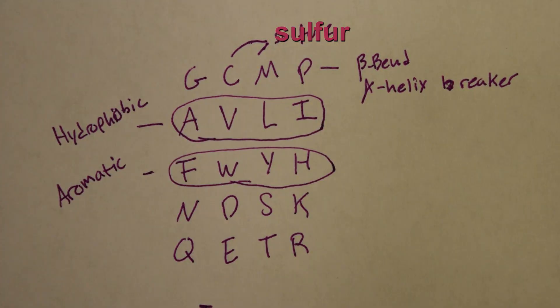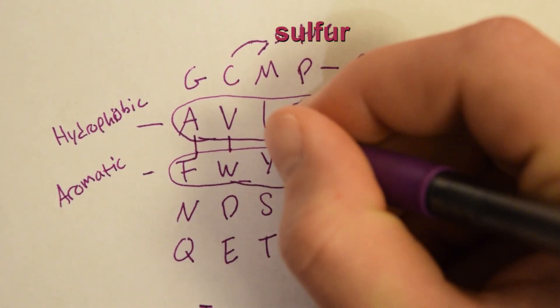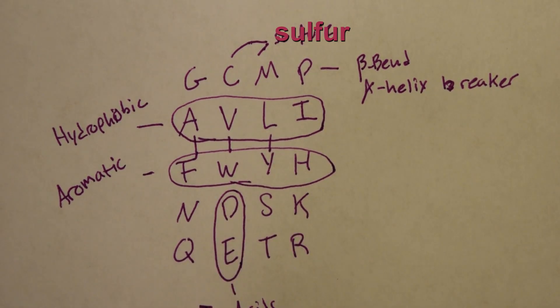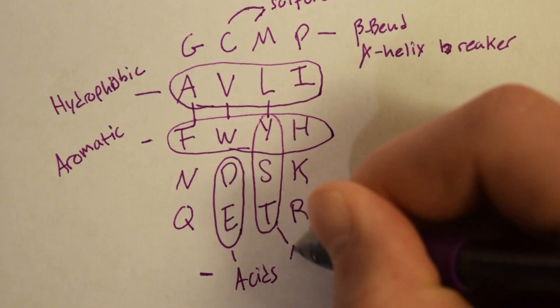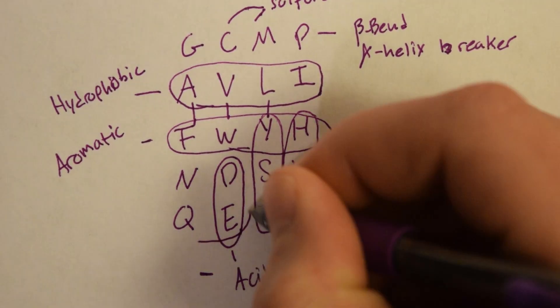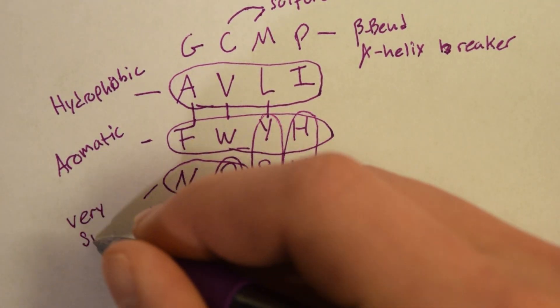FWYH are all aromatic, and FWY can also be put in the hydrophobic category. D and E are both acids, YST have alcohols on them, HKR are all bases, Q and E and also N and D are very similar in structure.